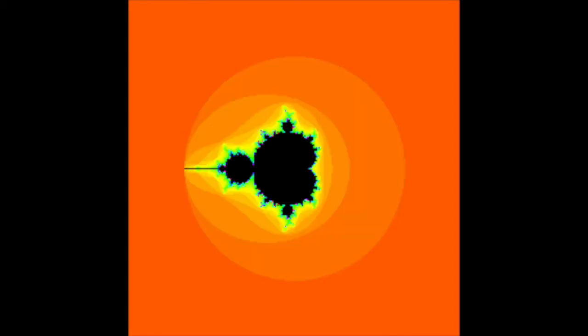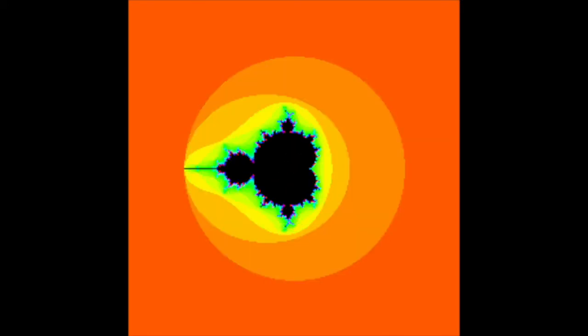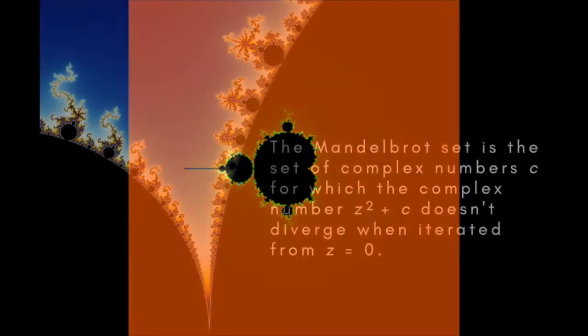then feed the result back into the formula, and keep going round and round, or iterating, in this way. The numbers in question are complex numbers, complex meaning that each is made up of a real number part and an imaginary one, a number times the square root of minus 1.